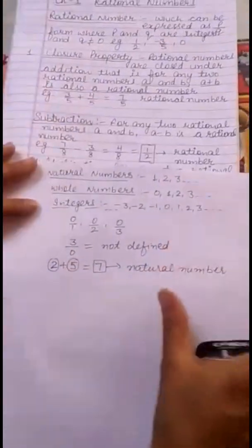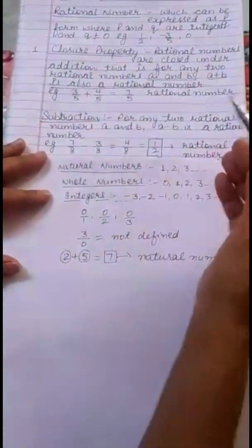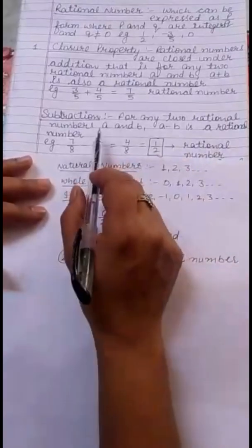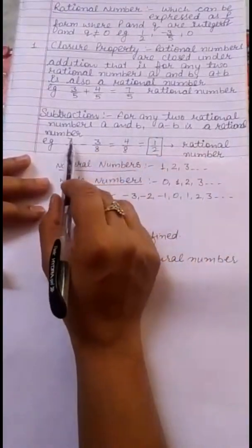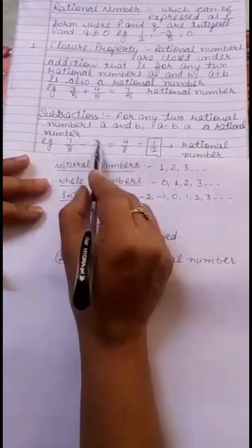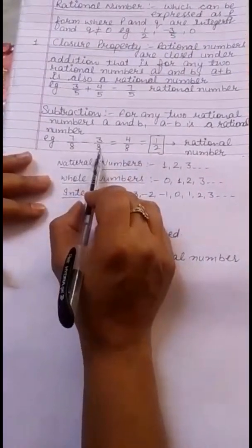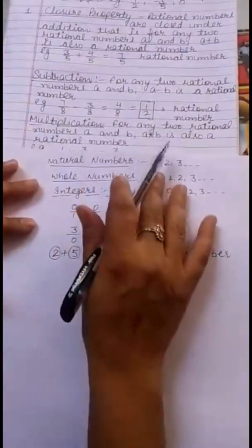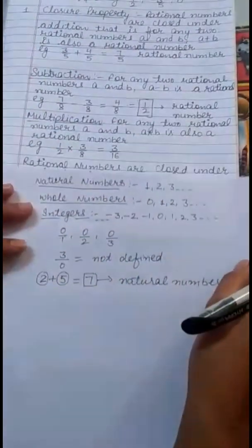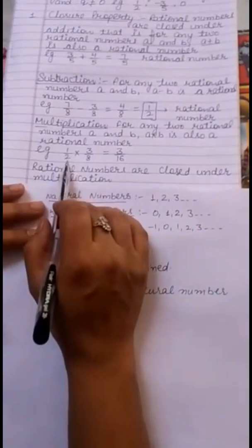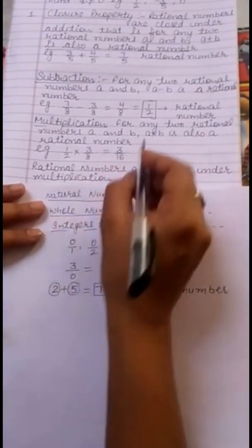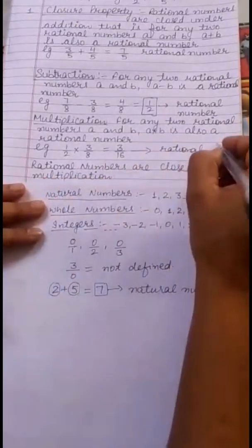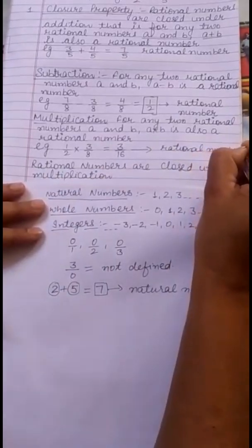Now we will check for subtraction. We will take examples and prove that subtraction is also closed for rational numbers. Taking two rational numbers 7 by 8 and 3 by 8, their difference is again a rational number. So rational numbers are closed under subtraction. Similarly, for multiplication, taking 1 by 2 and 3 by 8, the product is again a rational number. So rational numbers are closed under multiplication.